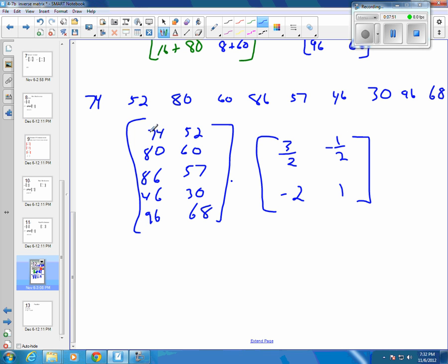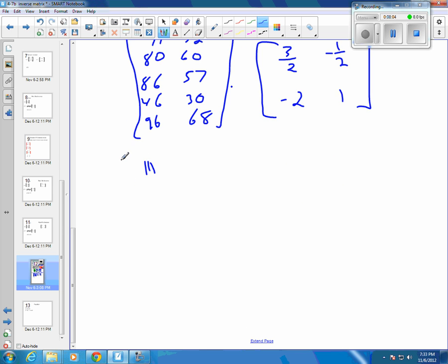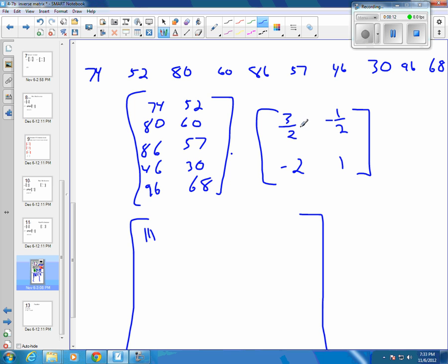And we do the multiplication on here, we should end up with our original numbers coming back. So we get 3 halves of 74. 74 divided by 2 is 35, 36, 37. 37 times 3 is 111. And then negative 2 times 52 would be minus 104. And then 3 halves of 80, so 80 divided by 2 is 40, 40 times 3 is 120. And then negative 2 times 6 is minus 120. And then 3 halves times 86, so half of 86 is 43, 43 times 3 is 129. And then negative 2 times 57 is 114.